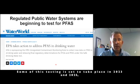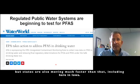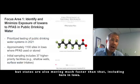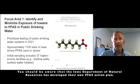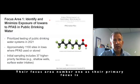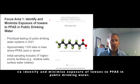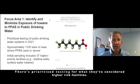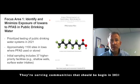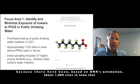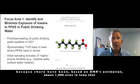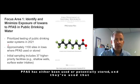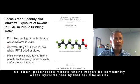Some of this testing is set to take place in 2023 and 2025, but states are also moving much faster than that, including here in Iowa. You should be aware that the Iowa Department of Natural Resources has developed their own PFAS action plan. Their focus area number one — their primary focus — is to identify and minimize exposure of Iowans to PFAS in public drinking water. There's prioritized testing for higher-risk facilities serving communities beginning in 2021, based on the DNR's estimation of about 1,100 sites in Iowa where PFAS has been either used or potentially stored. They've used that to prioritize which community water systems nearby could be at risk.